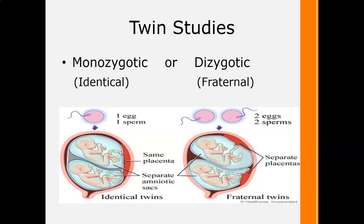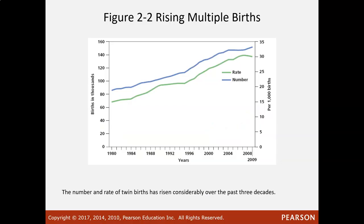Dizygotic twins — di meaning two — are commonly referred to as fraternal twins. These come from two eggs and two sperm, kind of like having a sibling group at the same time. Each of these twins could have the same placenta or separate placentas, though more commonly identical twins share the same placenta and dizygotic twins have separate placentas. Research suggests the rate of multiple births has increased, possibly because women are having children later in life, and after age 40 the chances of dizygotic twins increase because the woman is ovulating at a faster rate.